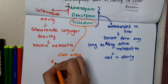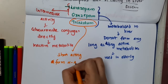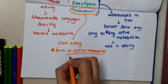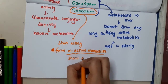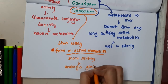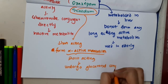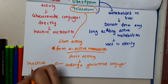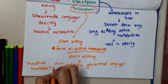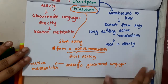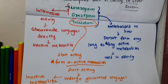Triazolam is a short-acting benzodiazepine. It forms alpha active metabolites, which are themselves short-acting. These alpha active metabolites also undergo glucuronide conjugation, resulting in the formation of inactive metabolites. So, the three benzodiazepines used in elderly and liver disease are lorazepam, oxazepam, and triazolam.